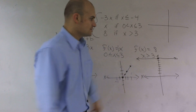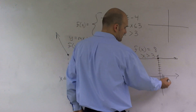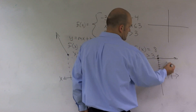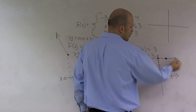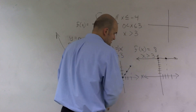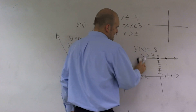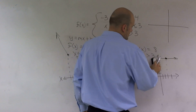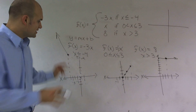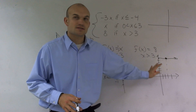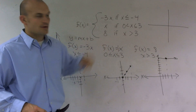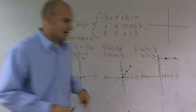The third function, f(x) = 8, is only true for values when x > 3. The rest of my graph I can get rid of. So a piecewise function is just three separate functions with their constraints, and now we're going to put them all onto one graph.